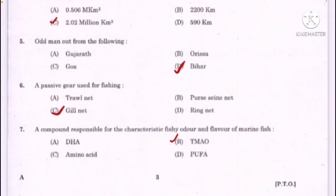Odd man out from the following — correct answer option D: Bihar. A passive gear used for fishing — correct answer option C: gill net. A compound responsible for the characteristic fishy odor and flavor of marine fish — correct answer option B: TMAO.